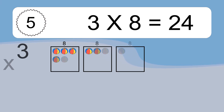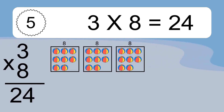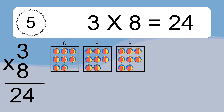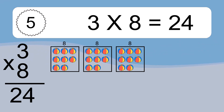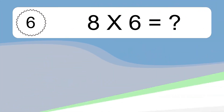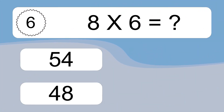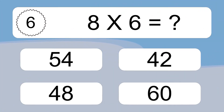3 times 8 equals what? We have 3 boxes and each box has 8 colorful balls inside. If you count all the balls in all the boxes together, you will have 3 times 8 balls. This equals 24 balls.